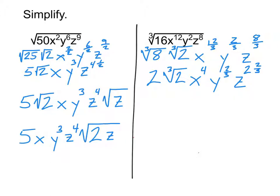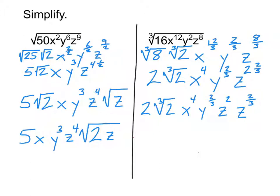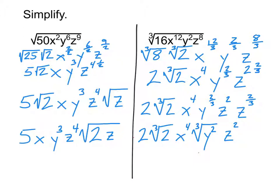After cleanup, we have: 2, cube root of 2, x to the 4th, y to the 2 thirds, z squared, and z to the 2 thirds. We can't leave fractional exponents in the final answer, so we turn each into a radical. Cube root of 2 stays; y to the 2 thirds becomes cube root of y squared — which is actually where it started since it didn't simplify. Then z squared is outside the radical, and z to the 2 thirds becomes cube root of z squared. Make sure z squared is clearly outside the radical from the y term.